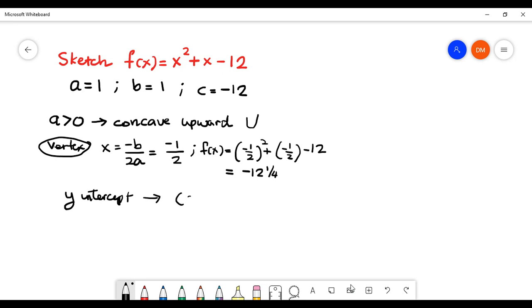So straightforwardly, you will get negative 12. See, when your x equals zero, you only have negative 12 here. And then your x-intercept: you make sure that your f(x) equals to zero.